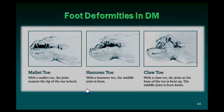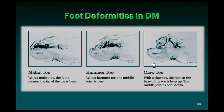Some more foot deformities — deformities of the toes. Mallet toe: the joint nearest to the tip of the toe, the terminal interphalangeal joint, is bent. In hammer toe, the middle joint is bent. In claw toe, the middle joint is bent and the metatarsophalangeal joint is extended — the joint at the base of the toe is bent up and the middle joint is bent down.